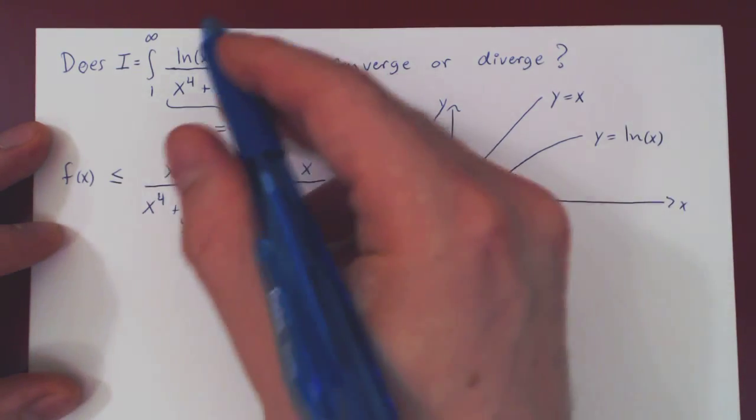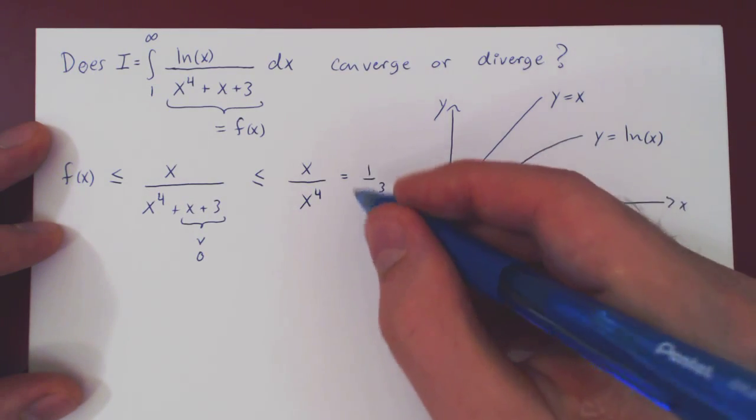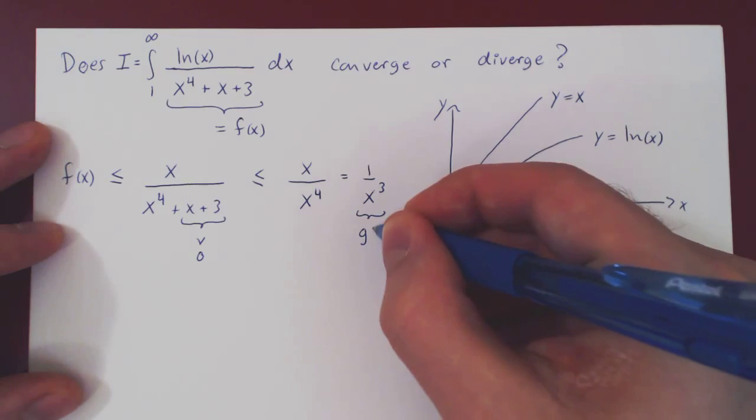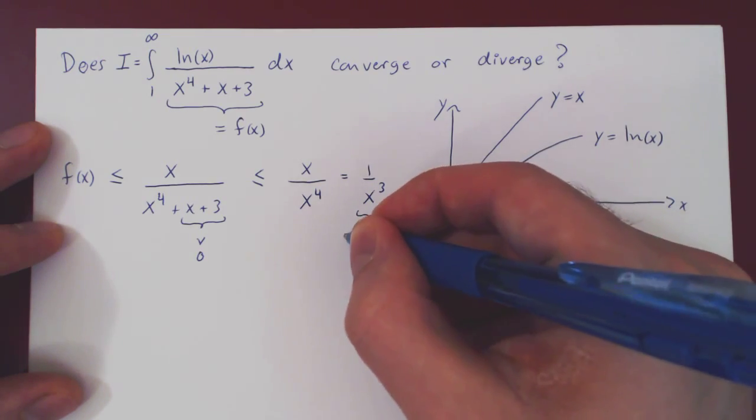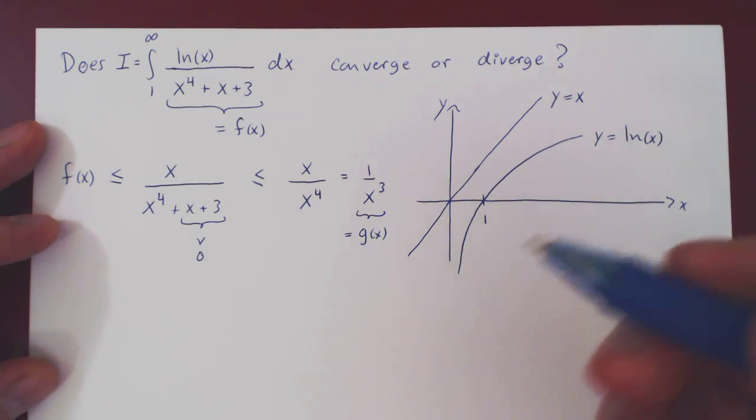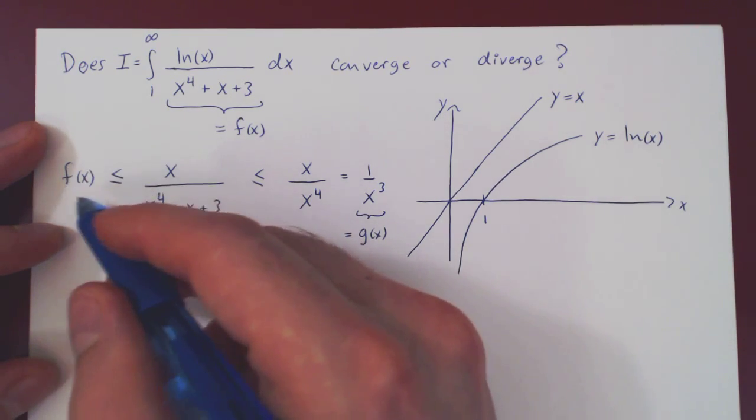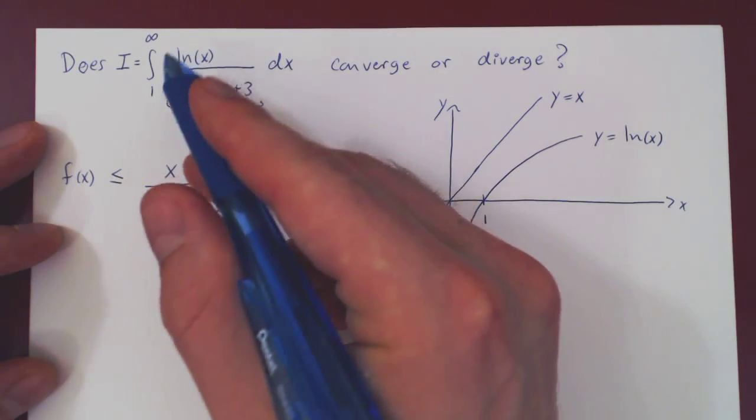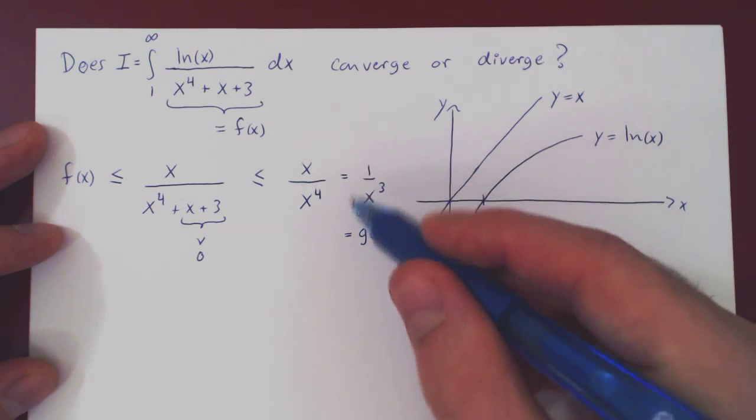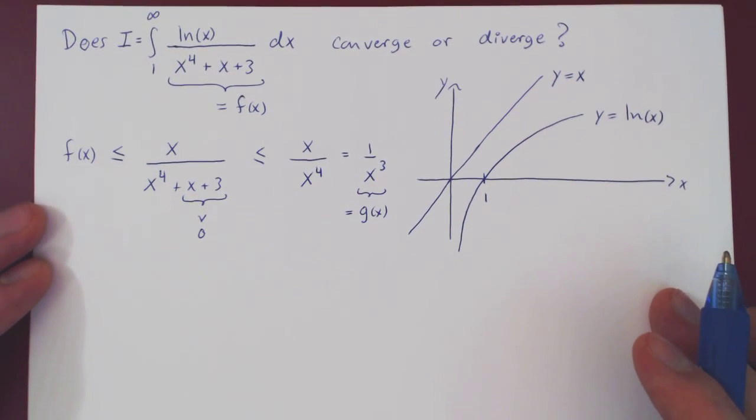So the original function, f, is at most 1 over x cubed. And this is our g of x in the comparison theorem. So now let's see. We have, or looking at the integral of f from 1 to infinity, let's look now at the integral of g from 1 to infinity. Let's see what happens.